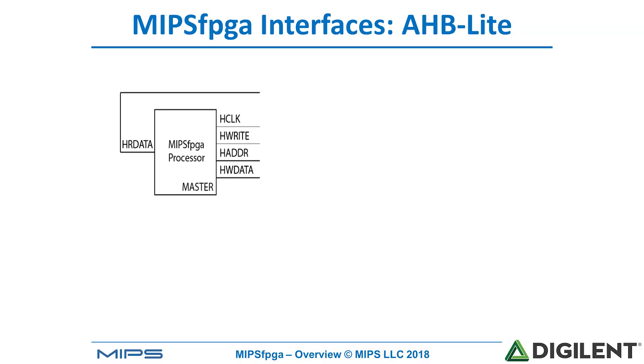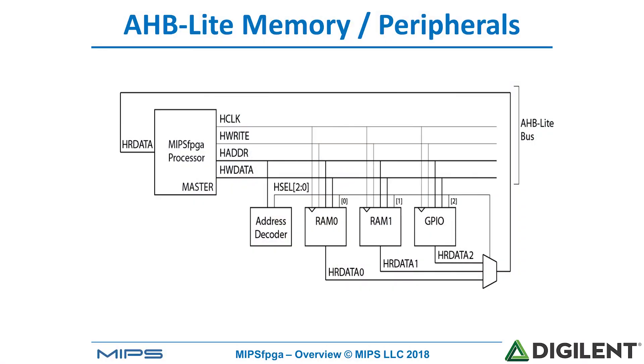The MIPS FPGA processor acts as the master of the HB light bus. It outputs the clock, the H write signal (write enable), the address, and the write data HW data. It receives as input the 32-bit HR data or read data signal. We can hang peripherals and memory off of this bus to interface with the MIPS FPGA core. The MIPS FPGA system has two memory blocks: RAM 0 and RAM 1. RAM 0 contains the boot code memory space; RAM 1 contains the user code memory space. We have a third module — the GPIO or general purpose IO module — that allows us to interface with the switches and LEDs on the FPGA board. We also have an address decoder and a multiplexer.